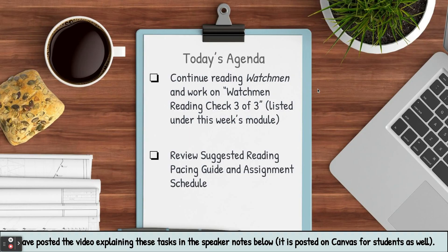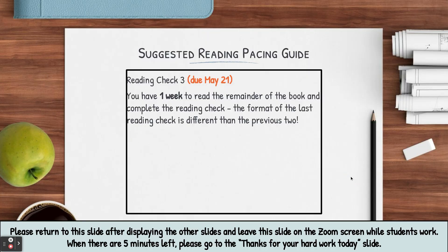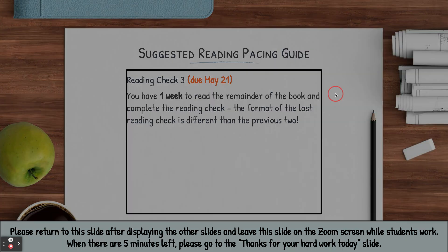If you look at the agenda for today, you're going to continue reading Watchmen and work on that final reading check, which is listed under this week's module. I'm going to review the suggested reading pacing guide and assignment with you and provide you with an example of how to complete the second part of your final reading check. You have one week to finish reading Watchmen. Your third reading check is due on May 21st, and the format has changed in some ways, which I'll go over with you quickly.